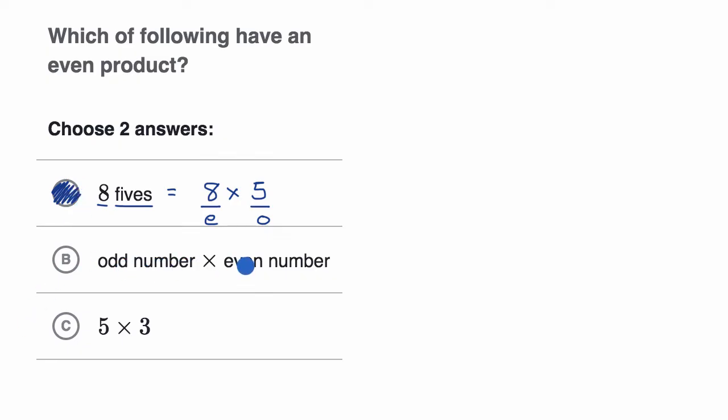An odd number times an even number. Well, we've already talked about that. Any, either an odd or an even, times an even is going to give you an even product. So we can fill that one in.